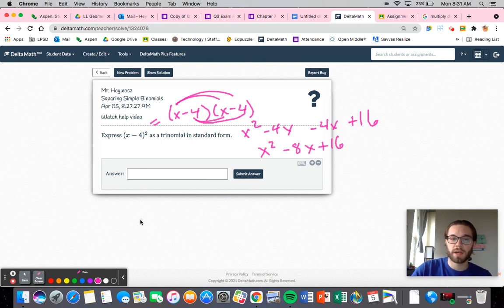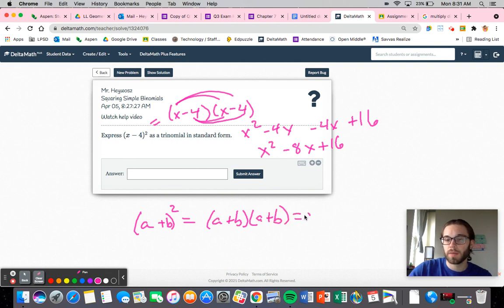So let's just take a minute and look at this in general. So if I gave you a plus b squared, what's going to end up happening? We get a plus b times a plus b. That's a squared, plus ab, plus ba, which is the same thing as ab, plus b squared.